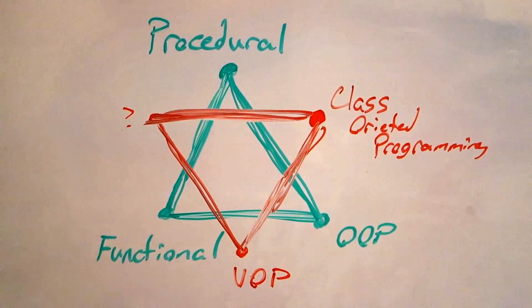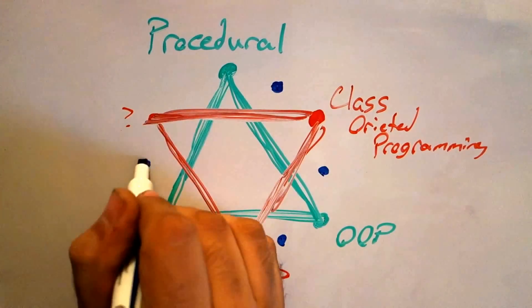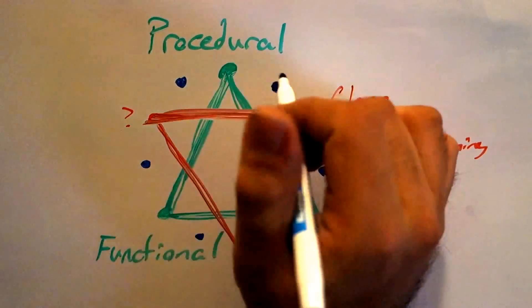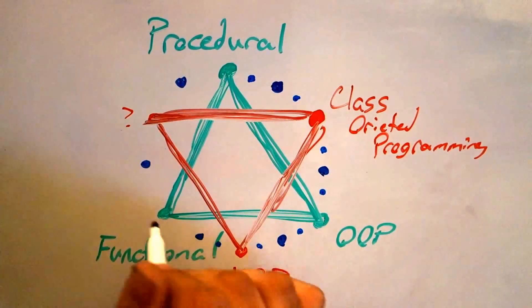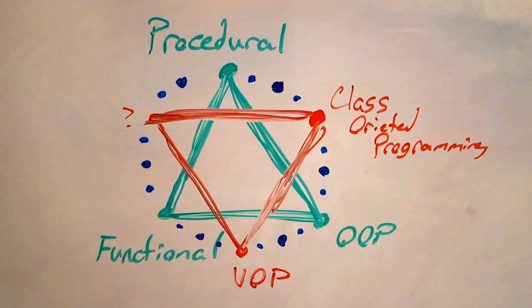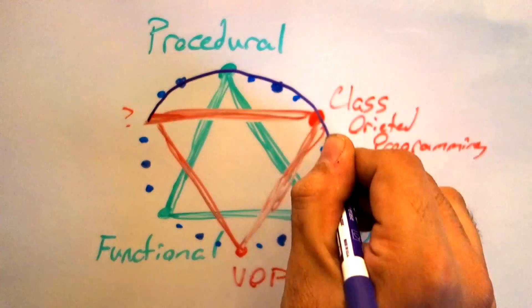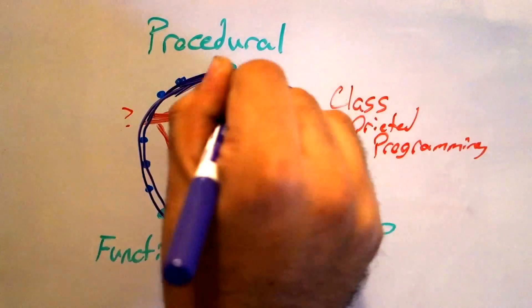But we could go further. We can make code that's mostly procedural, but also class oriented. And mostly object oriented, but also class oriented. And so on, and so on. So now our nice triangle of paradigms has morphed into what looks like a circle.